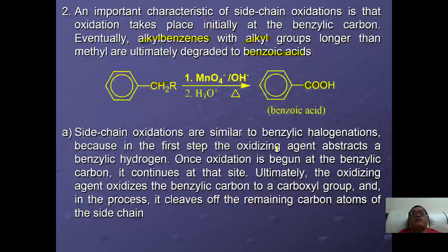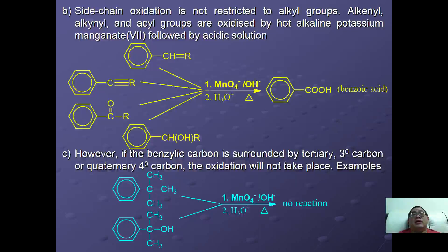Side chain oxidation is similar to benzylic halogenation because in the first step, the oxidizing agent extracts the benzylic hydrogen. Once oxidation begins at the benzylic carbon, it continues until the oxidizing agent converts the benzylic carbon to a carboxyl group, cleaving off the remaining carbons of the side chain.